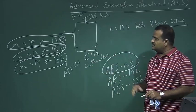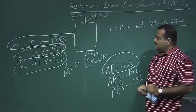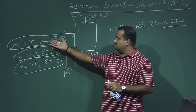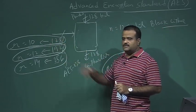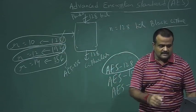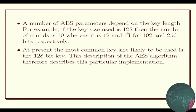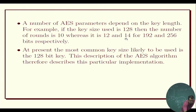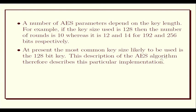AES-128 is the most popular variant because it has fewer rounds, making it more efficient and faster than the others. If we can achieve the same level of security with a smaller key size and fewer rounds, that version will naturally be most popular. The most common key size used is 128 bits.